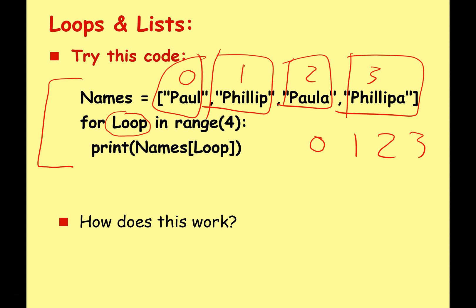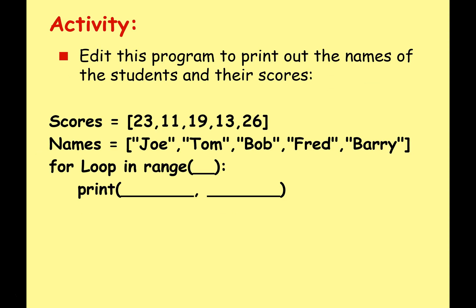Let's have a go at a little programming task. Edit this program to print out the names of the students and their scores. There are two arrays - one which is a list of scores and one which is a list of names. We have most of the code here; you need to work out what to put in and how to print out the name of the student and their score. Have a go and see if you can get it working.